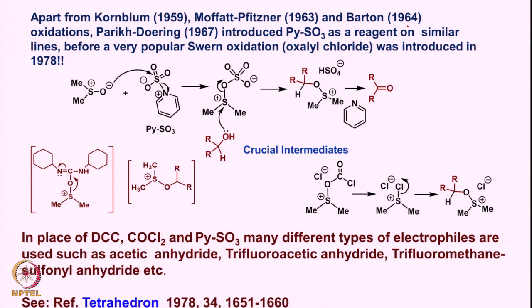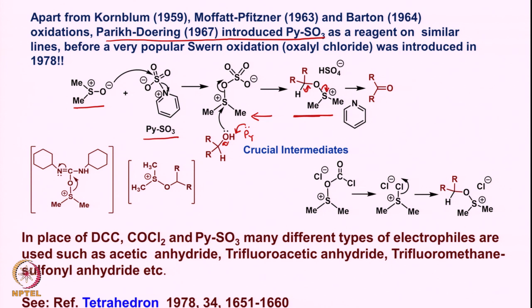Apart from Kornblum, Moffatt-Pfitzner, and Barton oxidation, Parikh and Doering reported in 1967 a reagent using the pyridine–sulfur trioxide complex. DMSO interacts with this pyridine·SO₃ complex, where there is an electrophilic sulfur and the leaving group is the pyridinium ion. The oxygen attacks onto this sulfur, pyridinium ion goes, and this intermediate forms, to which the alcohol attacks while pyridine takes up the proton.